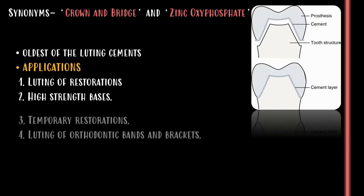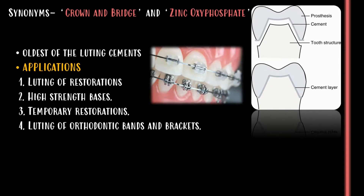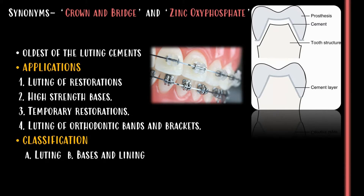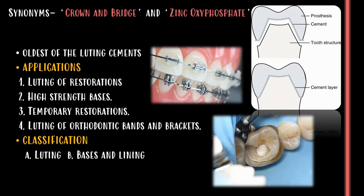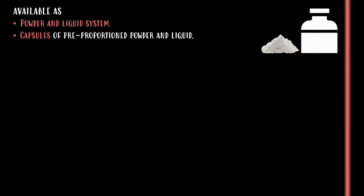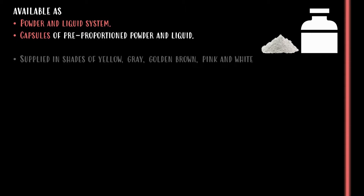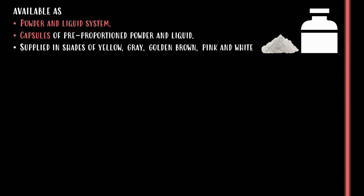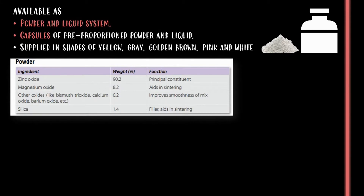Zinc phosphate cement is used for luting of restorations, as high-strength bases, temporary restorations, and luting of orthodontic bands and brackets. They are classified into luting, base, and lining cements. Zinc phosphate cement is available as a powder and liquid system or capsules of pre-proportioned powder and liquid.